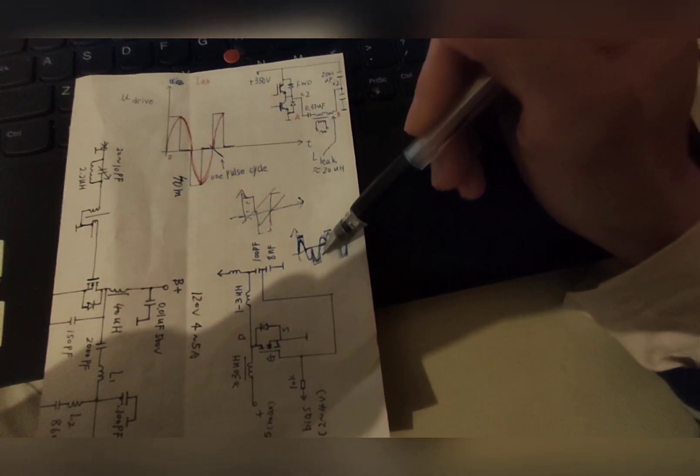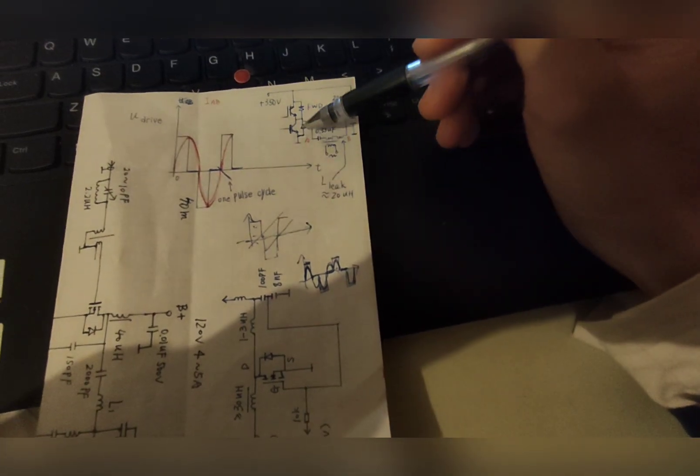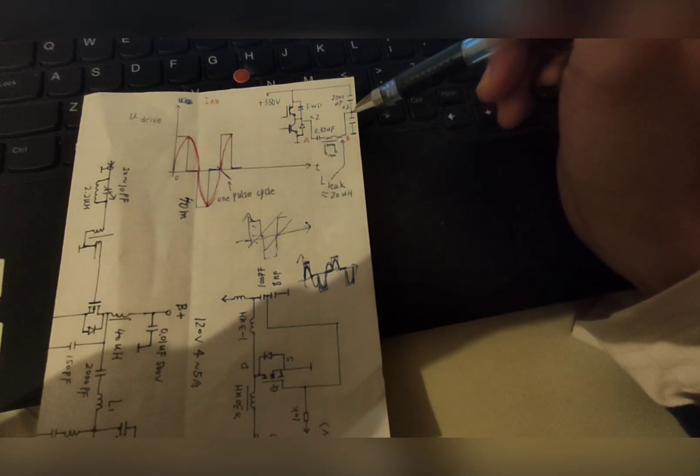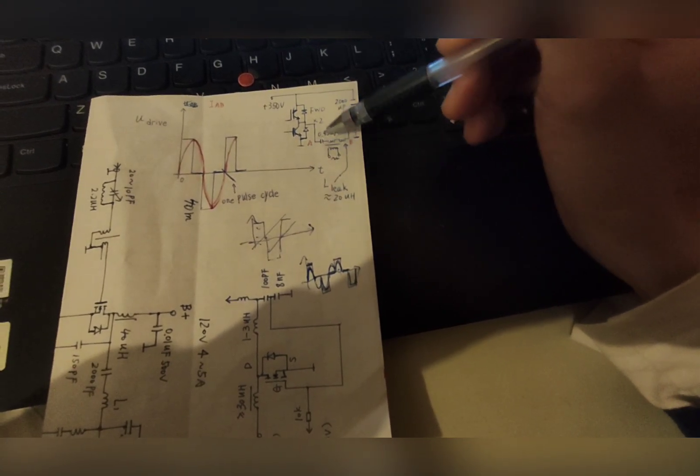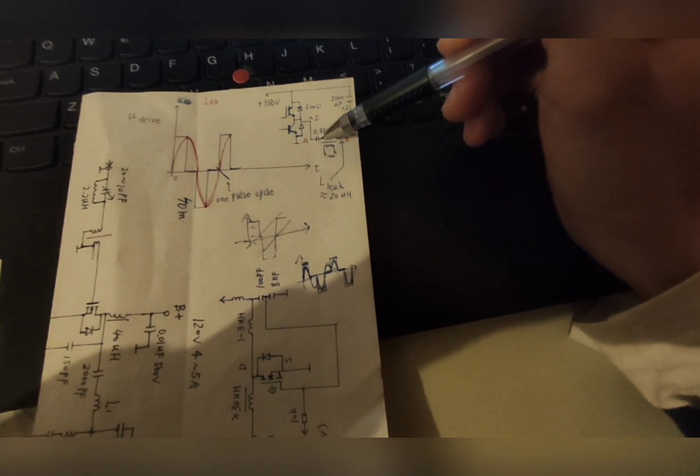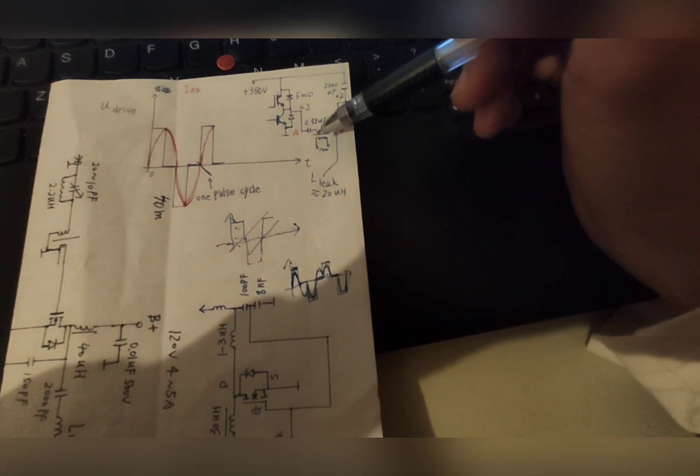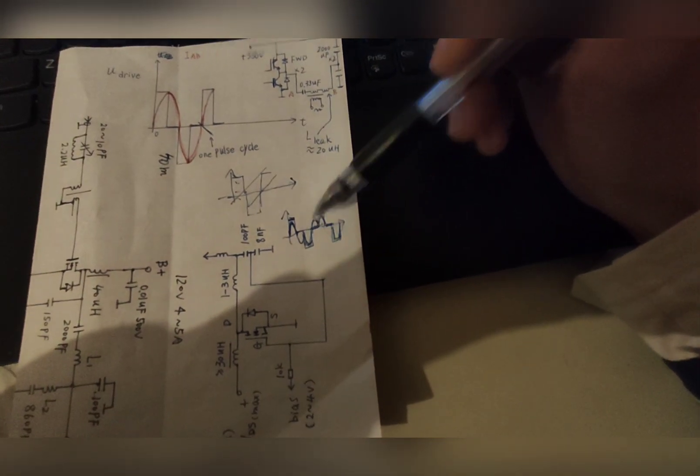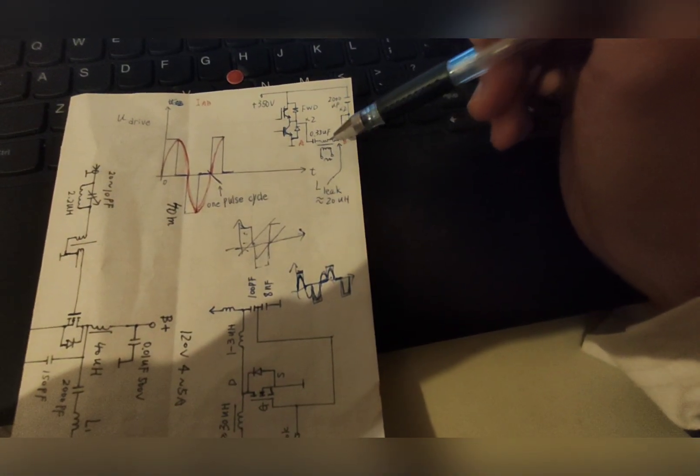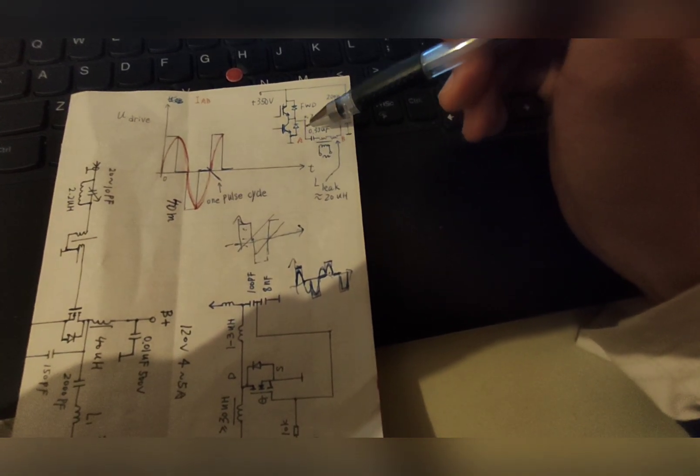And during the next cycle here, the lower IGBT conducts, so the current will go in this direction and the right part of the capacitor is charged to positive. And then it shuts off, so the right side will discharge like this.